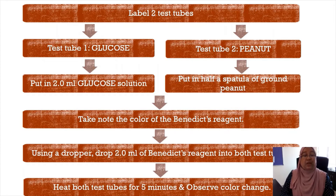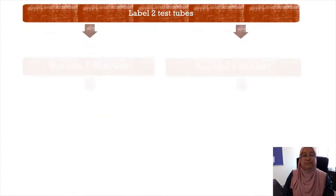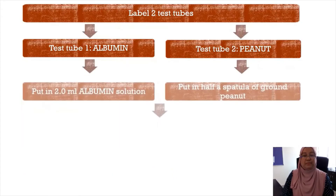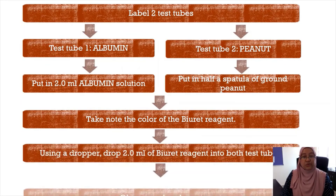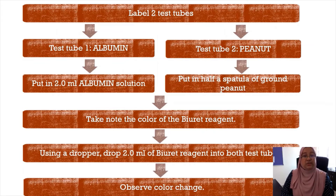Using a dropper, add 2 ml of Benedict's reagent into both test tubes. Heat both test tubes for 5 minutes and observe any color changes. This next procedure is carried out to determine the presence of protein.